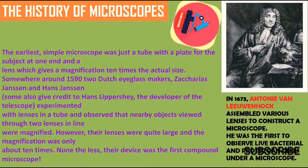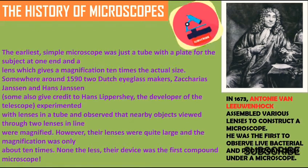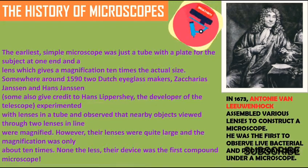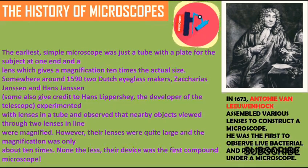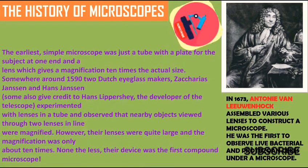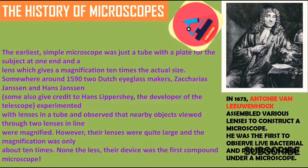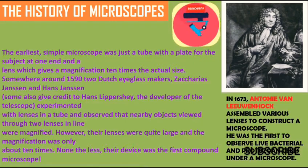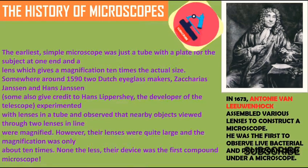In the history of the microscope, the earliest simple microscope was just a tube with a plate for the subject at one end and a lens which gives a magnification 10 times the actual size. Somewhere around 1590, two Dutch eyeglass makers — Zacharias Jansen and Hans Jansen — experimented with lenses in a tube and observed that nearby objects viewed through two lenses in line were magnified. The lenses were quite large and magnification was only about 10 times; nonetheless, their device was the first compound microscope.